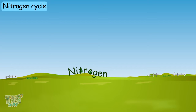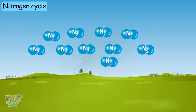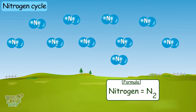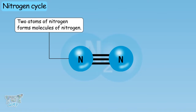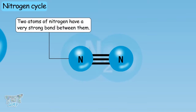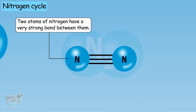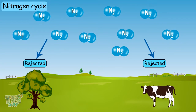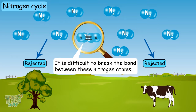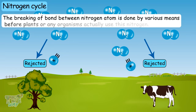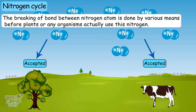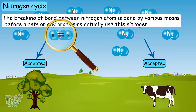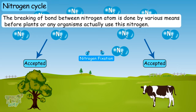Nitrogen exists as a gas in our environment, and its formula is N2 — that is, two atoms of nitrogen are in each molecule. These two atoms have a very strong bond between them, which is why nitrogen cannot be used by any living organism, as it is very difficult to break this bond. Breaking this bond between the nitrogen atoms is done through various means before any plants or organisms can use it.